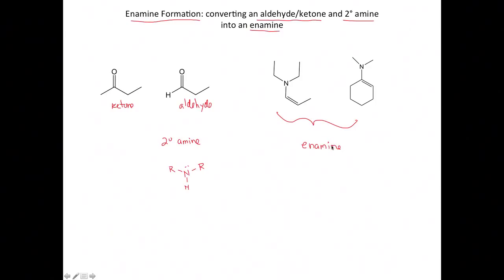An enamine is exactly what you think it is — it is an alkene directly attached to an amine. So here we have a carbon-carbon double bond directly attached to a nitrogen. Here's another example: a carbon-carbon double bond attached to a nitrogen. That is the enamine functional group.